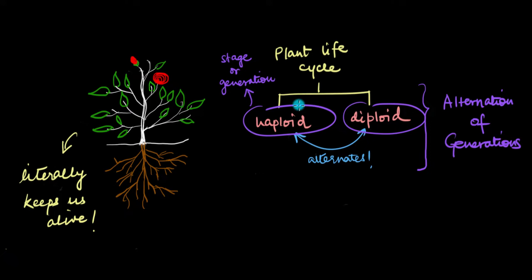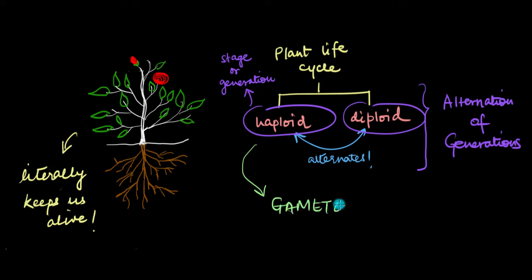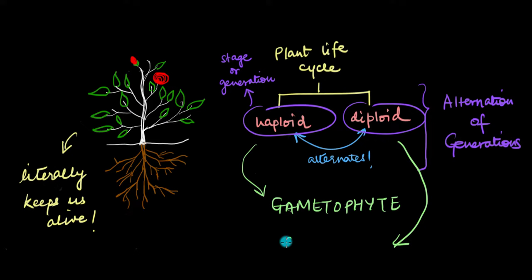The haploid stage or generation, where the cells have only one set of chromosomes, is called the gametophyte. The diploid stage or generation, with cells having two sets of chromosomes, is called the sporophyte.